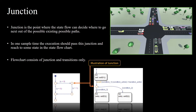A junction is a place where the activity of the state can stay temporarily, then it will decide where to go and where not to go. If both conditions are not satisfied, it will come back to the initial state and stay there. Junctions decide the path — where to go and where not to go — that is the only activity a junction does.